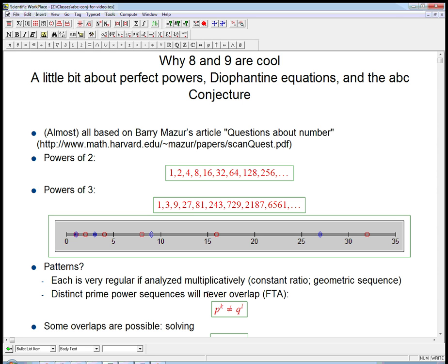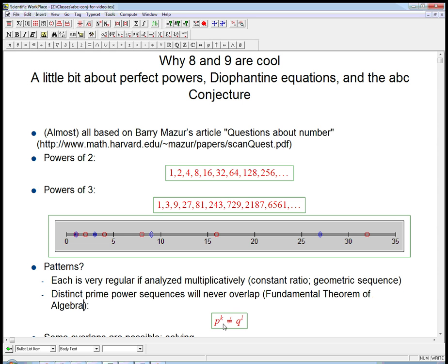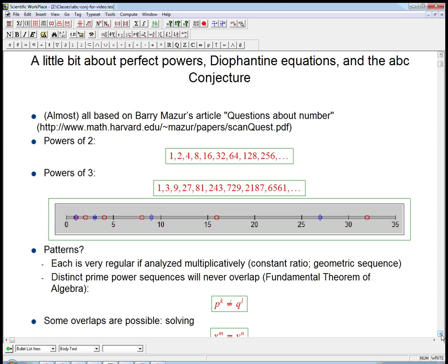...you're never going to get an overlap. That's really a special case of the fundamental theorem of algebra that says that any number has a unique prime factorization. And so if it factors as p to the k, it's certainly not going to factor as q to the l for some other prime q, no matter what the powers are. So that's just the fact that these don't overlap, except of course at 1, is a special case of the fundamental theorem of algebra.